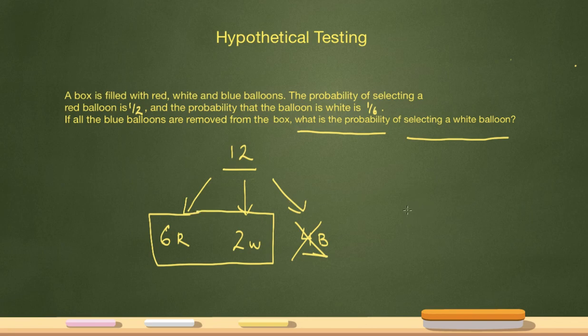Probability, I need the total number of possibilities, or total number of things, and that's the total number of balloons right now I'll have is eight. And out of the eight, two are white. So my probability of selecting a white balloon out of what I'm left with is one-fourth.